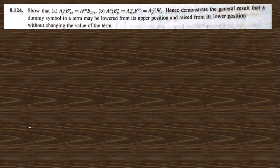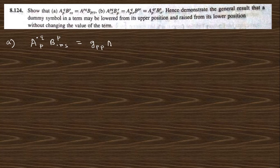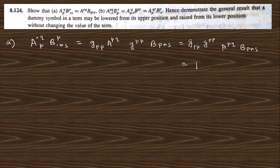Go to the next question. For question a, a^dot_q_p times b^p_dot_rs. You need to change p to the upper position, so only p changes. You write g^pp times a_pq, and for b, p is replaced on the lower side, so g^pp times b^p_rs. These g^pp factors cancel each other out, and you are left with a^pq times b_p_rs, which is proved.